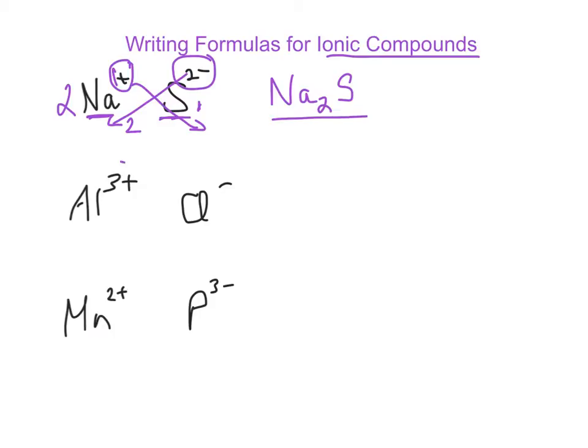Same here. I have 3+ and 1-. Can you see I need 3 of these? So I'll have +3 and -3. So that for every Al, I need 3 Cls. Or crisscross down the 1 and the 3, and you get a 1 and a 3, or just AlCl3.